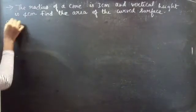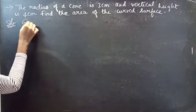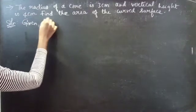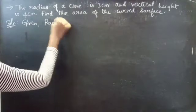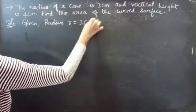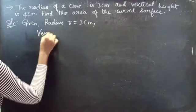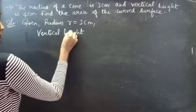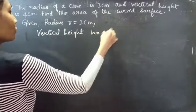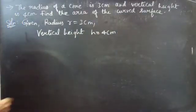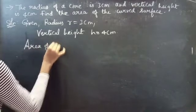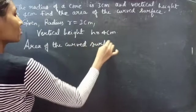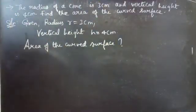Solution. Given: radius r equals 3 centimeters and vertical height h equals 4 centimeters. So here we have to find the area of the curved surface.